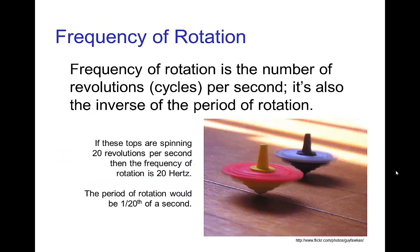The same concept applies to rotation. We can talk about the frequency of rotation — that's the number of turns, revolutions, or rotations per second. Sometimes this is measured in minutes, such as RPMs, revolutions per minute. In this example, if the tops are spinning at 20 revolutions per second, then that's a frequency of 20 hertz. The corresponding period is the inverse: one twentieth of a second to make one revolution.